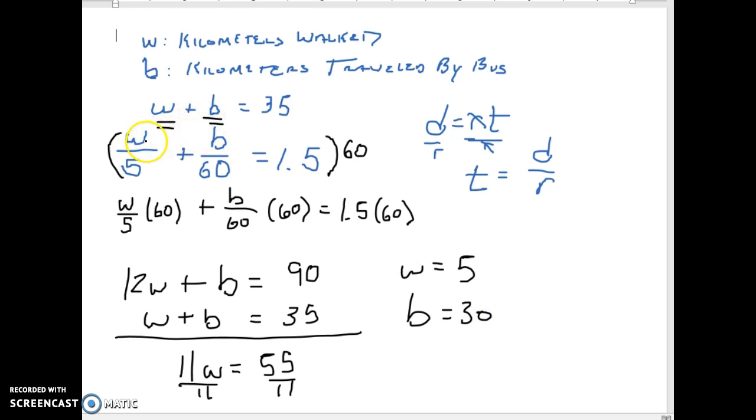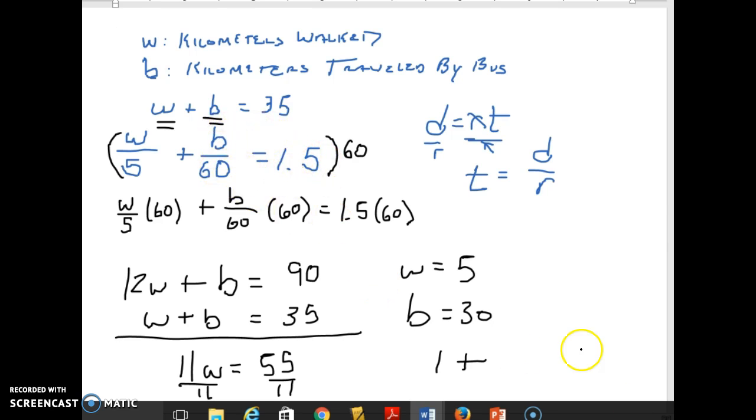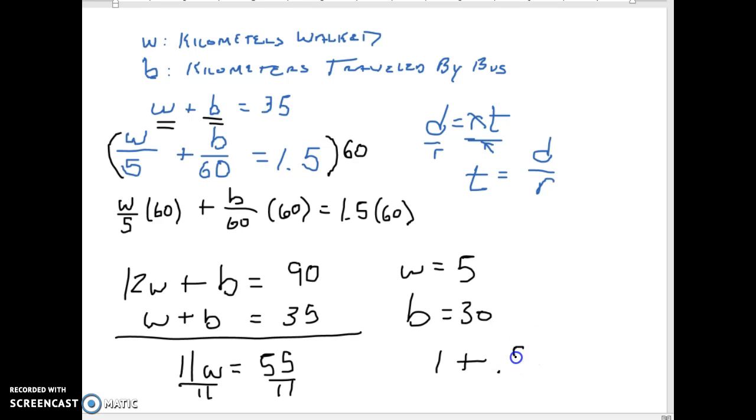Let's see: 5 divided by 5 is going to be 1. If I put 5 in for W there, plus 30 in for B here, gives me 30 divided by 60 is 0.5, and that has to equal 1.5. So it works in here, and obviously it works here because that's where we got it.